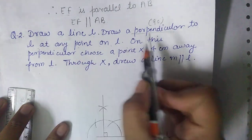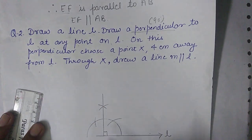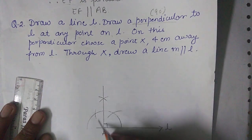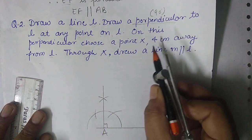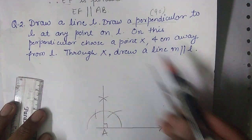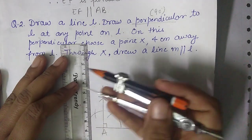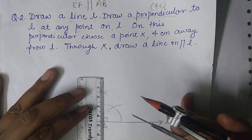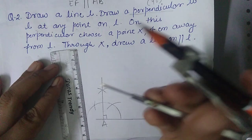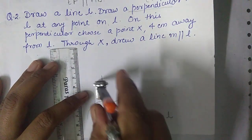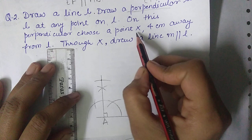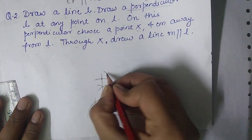As the question says, draw a perpendicular to L at any point on L — let it be A. On this perpendicular, choose a point X that is 4 centimeters away from L. Open the compass up to 4 centimeters, mark an arc, and that is point X — 4 centimeters away from L.